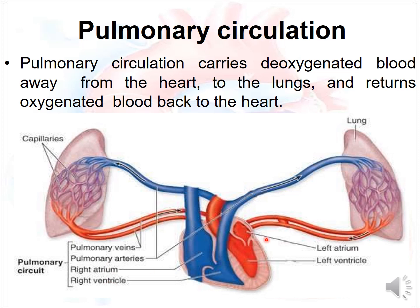The left atrium and left ventricle are part of the systemic circuit. The pulmonary veins empty oxygenated blood into the left atrium. The capillaries in the lungs are where gas exchange takes place.